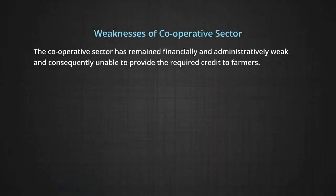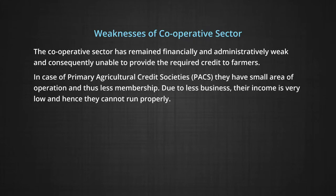The cooperative sector has remained financially and administratively weak, and consequently unable to provide the required credit to farmers. Primary agricultural credit societies (PACS) have small areas of operation and thus less membership; due to less business their income is very low. Serious regional imbalances exist — 70 percent of total loans are accounted for by only eight states. Most major drawbacks lie in the recovery of loans, with overdue amounts continuously increasing, and organizations suffering from managerial inefficiency.